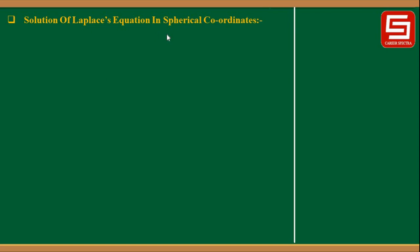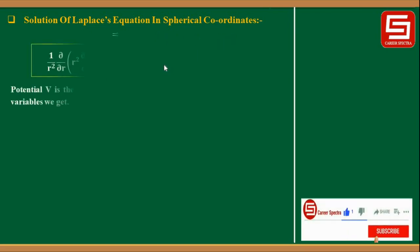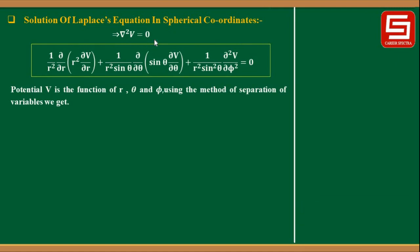Solution of Laplace equation in spherical coordinates. The Laplace equation, i.e., del-squared V = 0, in spherical coordinates is: (1/R²)(∂/∂R)(R² ∂V/∂R) + (1/R² sinθ)(∂/∂θ)(sinθ ∂V/∂θ) + (1/R² sin²θ)(∂²V/∂φ²) = 0. When we solve this equation, the potential function is a function of r, θ, and φ. Using the method of separation of variables, the general solution is obtained.